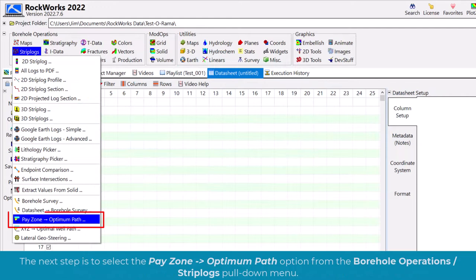The next step is to select the Pay Zone to Optimum Path option from the borehole operations strip logs pull-down menu.